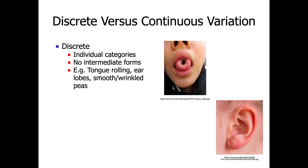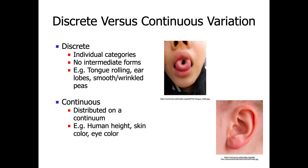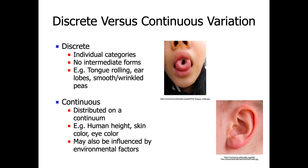Continuous variation, in contrast, is a situation where the variation is distributed on a continuum. Examples of that might be human height, skin colour, or eye colour, because this variation occurs continuously. And this kind of variation, notably, can also be influenced by a variety of environmental factors.